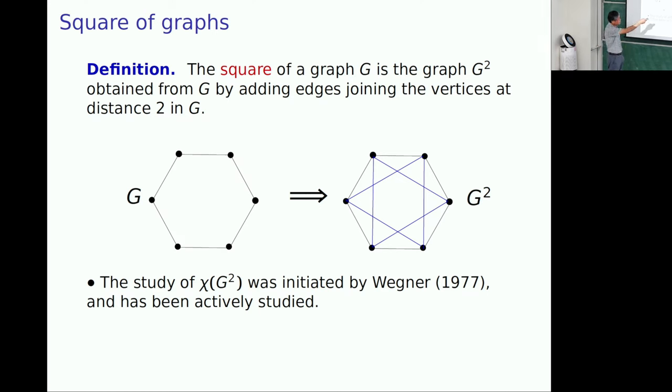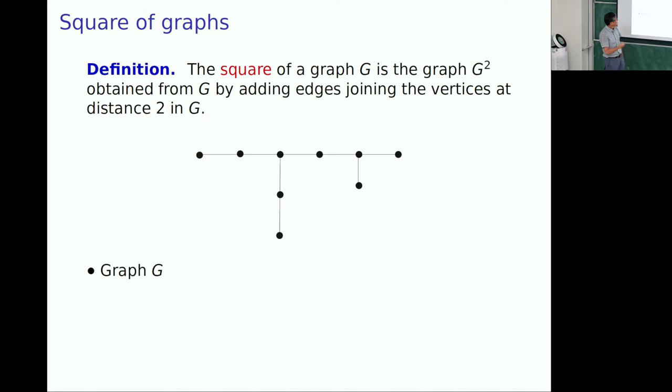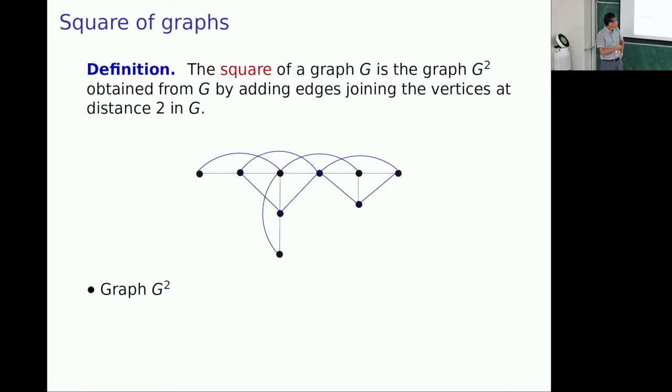So C6 becomes this way. And this type of study started by Wegner in 1977. But actually, I don't know why he started this subject. Maybe, but almost 2000, suddenly this topic gets some attention. Let me explain a little more about the definition again. So this is original graph, very simple, but square and a little complicated.